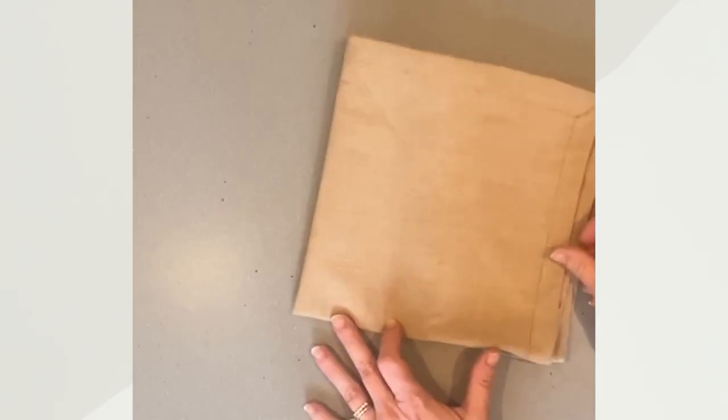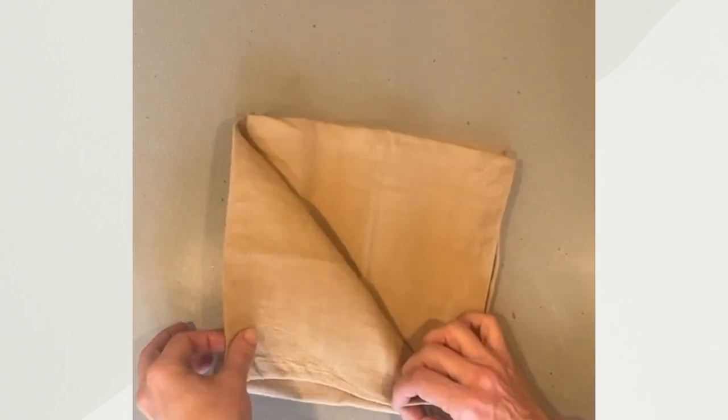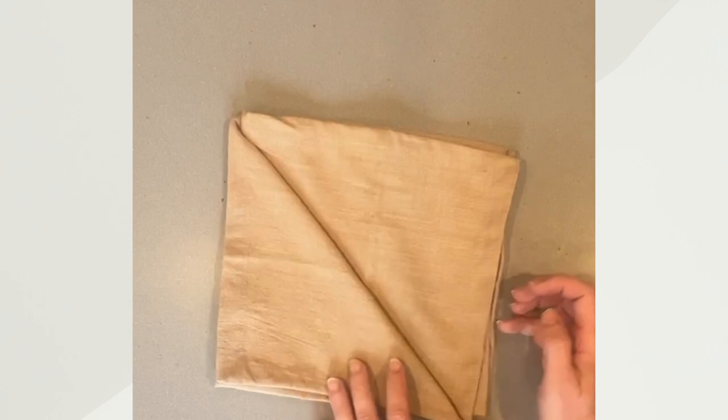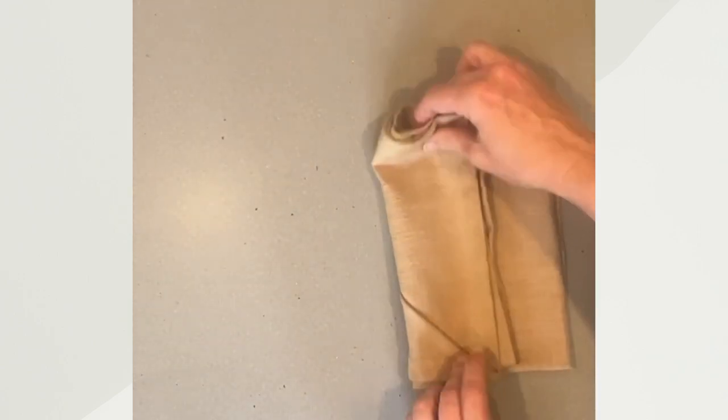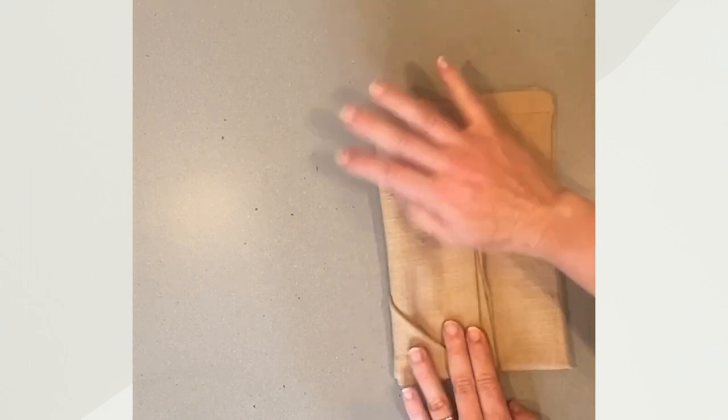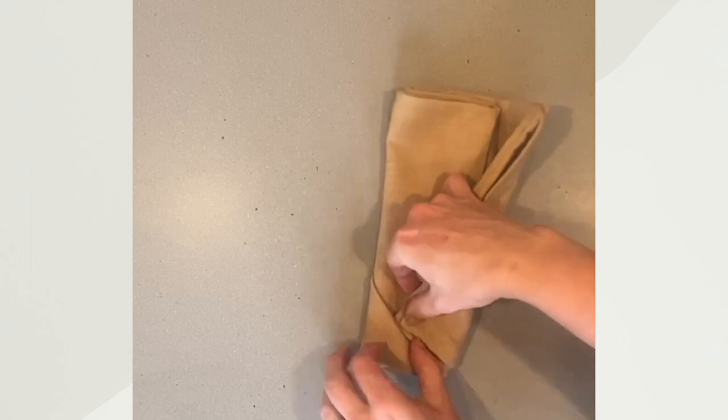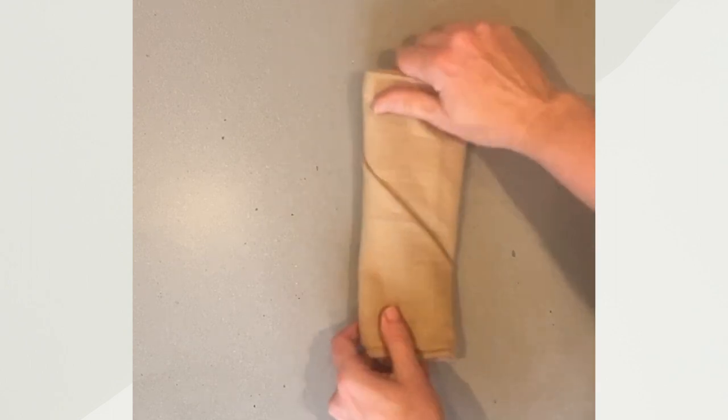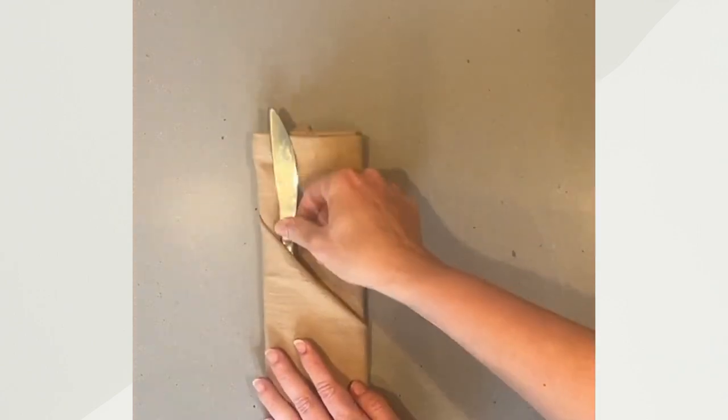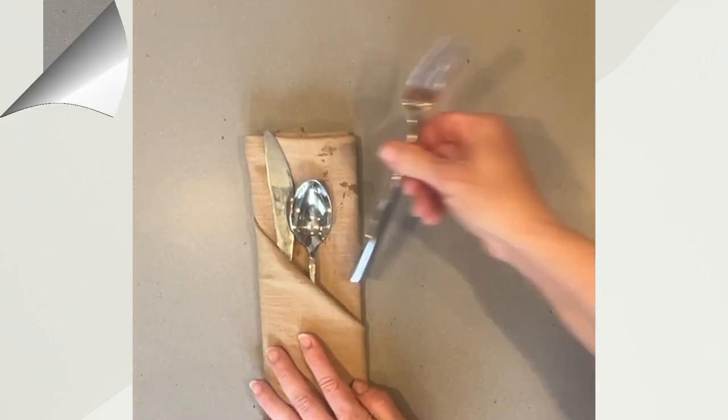Flip it over and put this side there. You have a little pocket that we created right here. Going to fold this side into it and then flip over, just add your silverware like this.